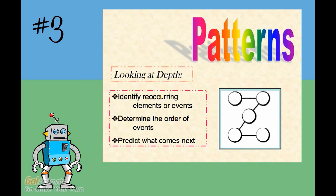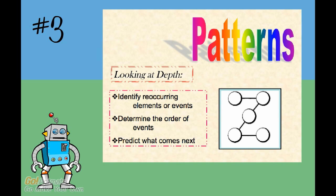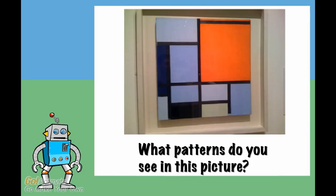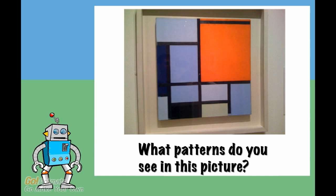The next icon stands for patterns. Patterns are when something happens again and again. What patterns do you see in this picture? I see a lot of squares and rectangles in the colors blue and orange.